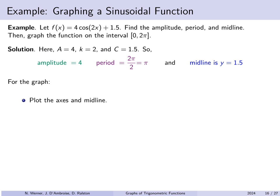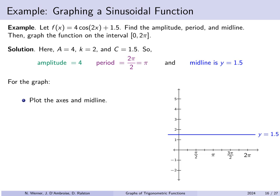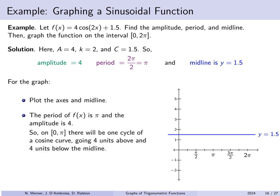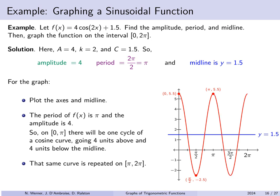To graph f(x) = 4cos(2x) + 1.5 on [0, 2π]: we plot the axes and draw the midline at y = 1.5. The period is π, so on the interval from 0 to π there is one full cycle of a cosine curve, starting 4 units above the midline, reaching a minimum 4 units below the midline at the halfway point, and returning to the maximum at x = π. From π to 2π, the same picture repeats. Here is the completed graph of f(x) = 4cos(2x) + 1.5.